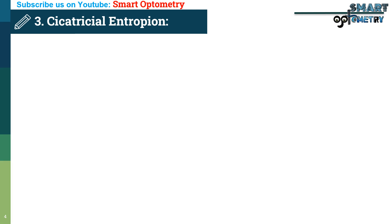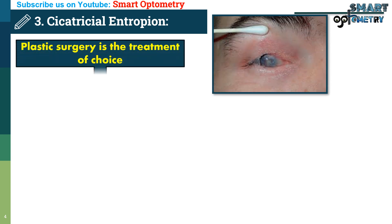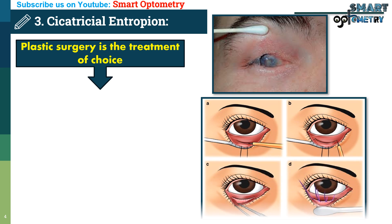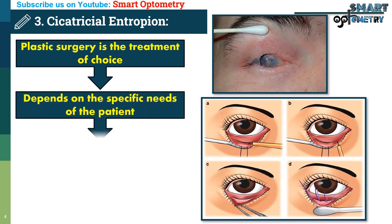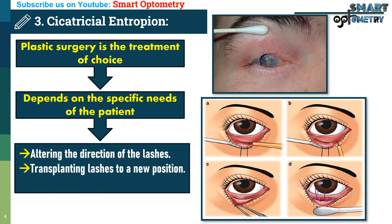Treatment of cicatricial entropion: For cicatricial entropion, which is caused by scarring and contraction, plastic surgery is the treatment of choice. The surgical approach depends on the specific needs of the patient and can include altering the direction of the lashes, transplanting the lashes to a new position, or straightening the distorted tarsal plate to restore proper alignment.